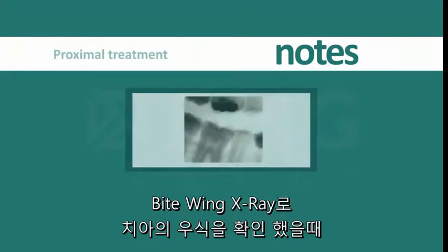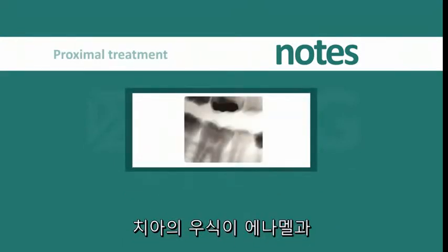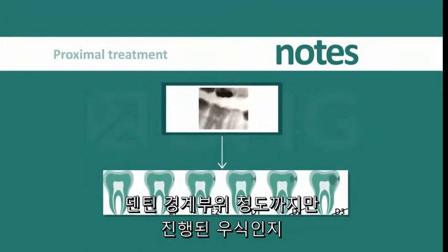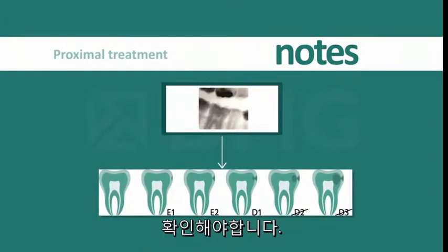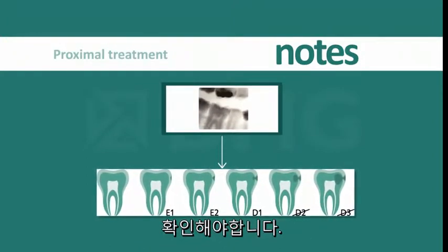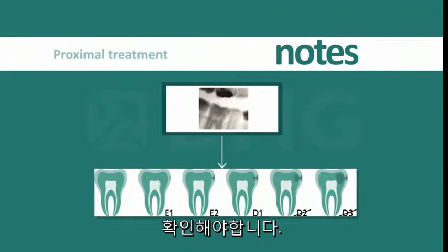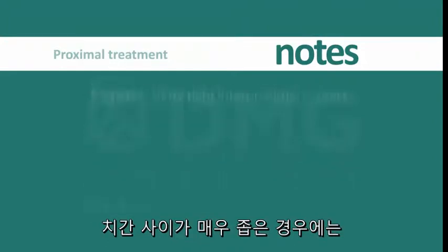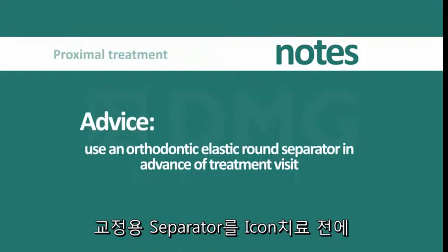After determining that there is a lesion interproximally as visualized on a recent bitewing radiograph, confirm that the lesion has not extended beyond the dentino-enamel junction for the purposes of the current assessment. In cases of a very tight interproximal contact, it is advised to use an orthodontic elastic round separator in advance of the treatment visit.